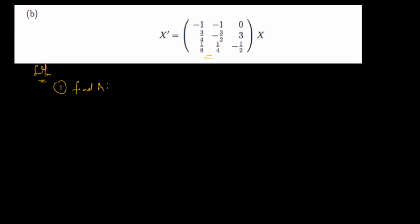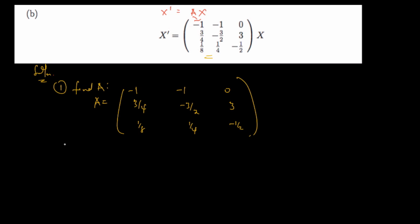So the first step of the solution is to find your matrix A. When we compare and write x' = Ax, we observe that A is the coefficient matrix: negative one, negative one, zero; three over four, negative three over two, three; one over eight, one over four, negative one over two. So we've gotten our coefficient matrix.